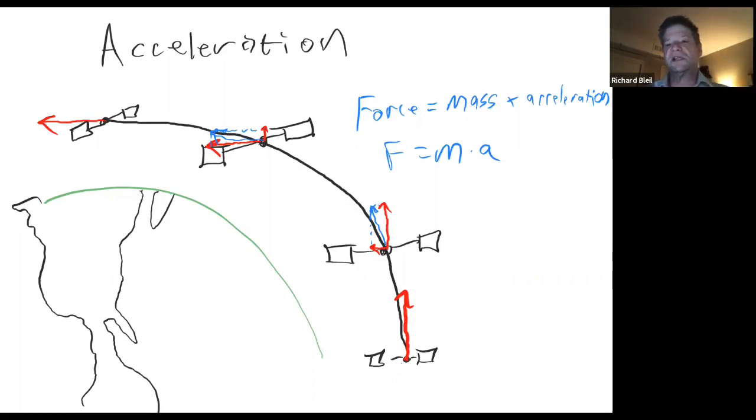The reason acceleration is a vector is because the directionality changes. If you have a satellite in orbit, as it is moving from the equator north, you may notice that the vector is pointing straight up, is going straight north.